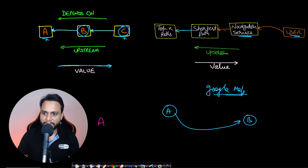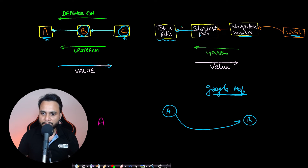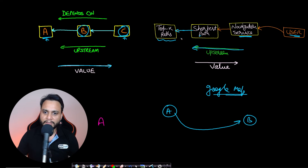The navigation service is not only finding a shortest path — it will also include services like ETA and many others. The navigation service imports every functionality of the shortest path service, and the shortest path service makes use of the top-K path service. So top-K path is the most independent component. Moving from right to left is upstream, moving from left to right is downstream, and the navigation service holds the maximum value while top-K path holds the least.